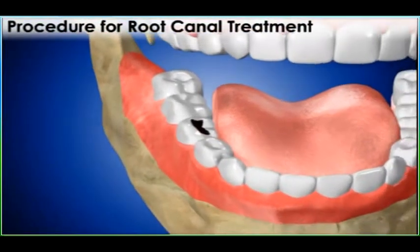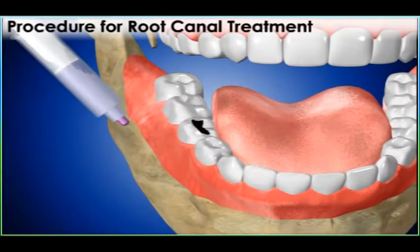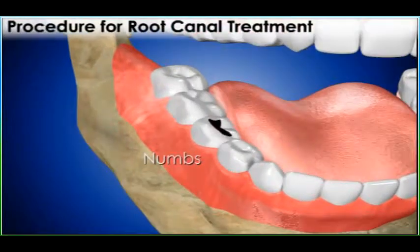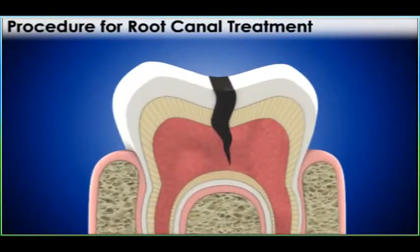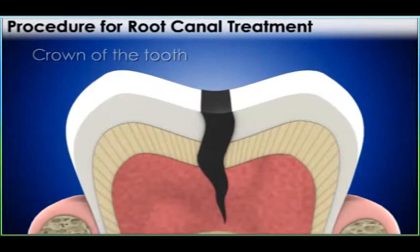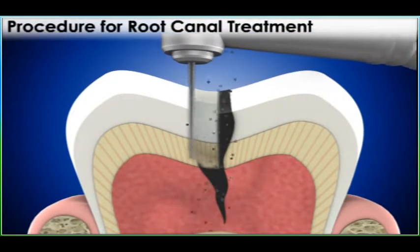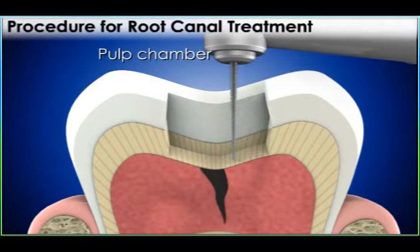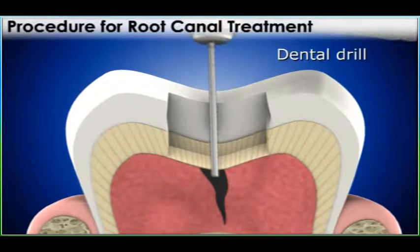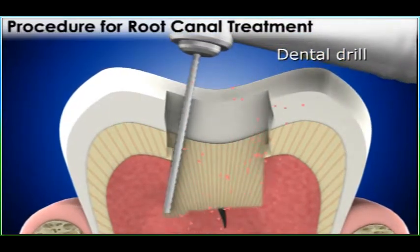The procedure for root canal treatment begins with the dentist numbing the tooth. An opening is made through the crown of the tooth to the pulp chamber, which is reached with the help of a dental drill after removing all the decayed and carious dentine.